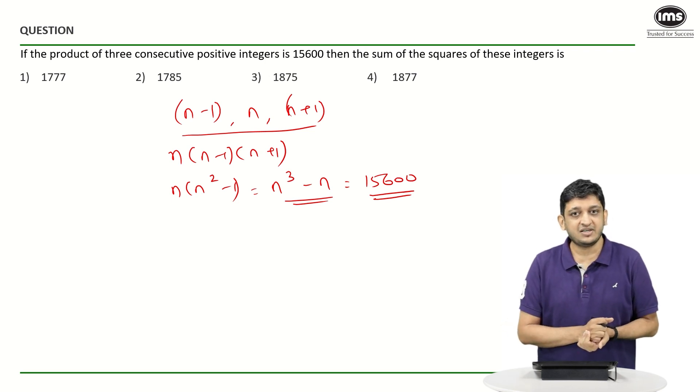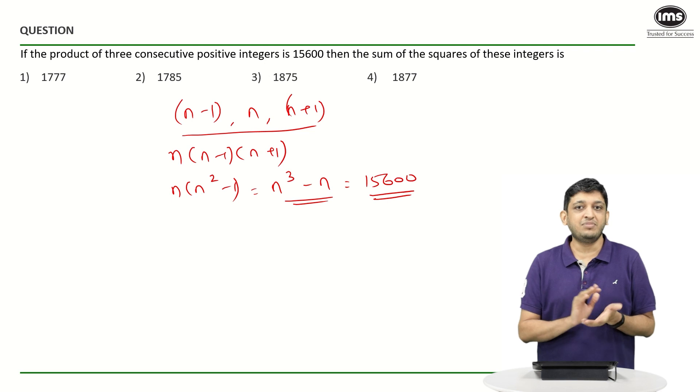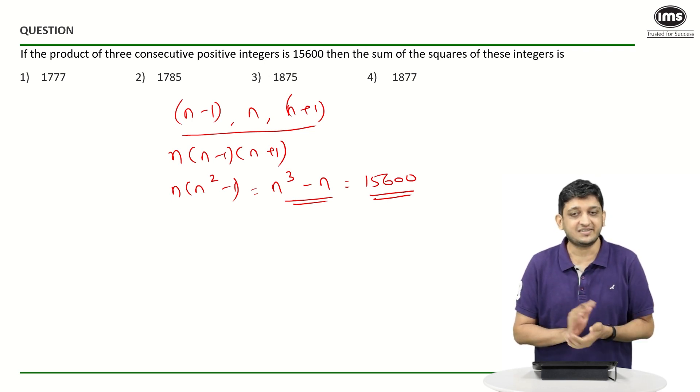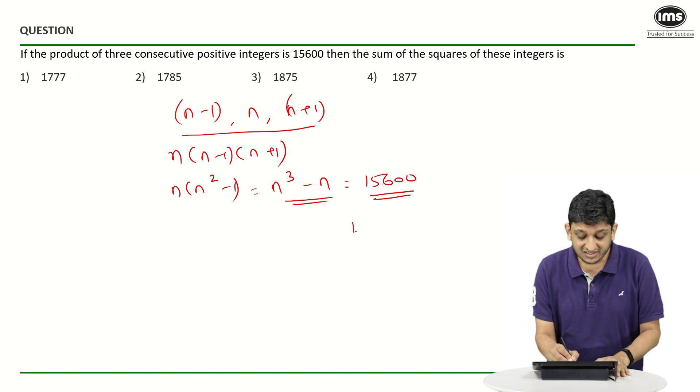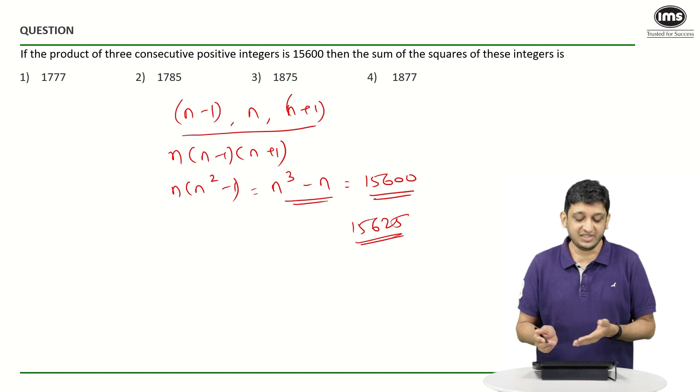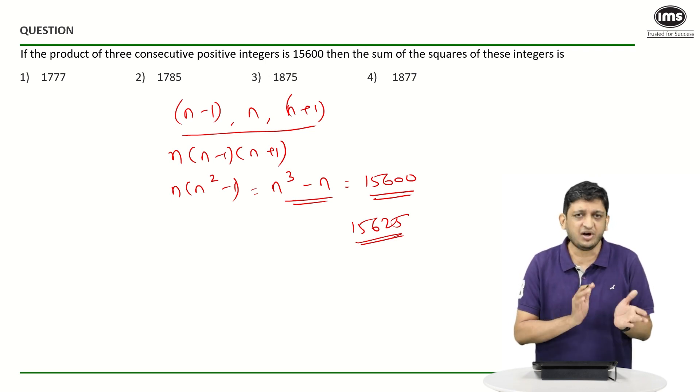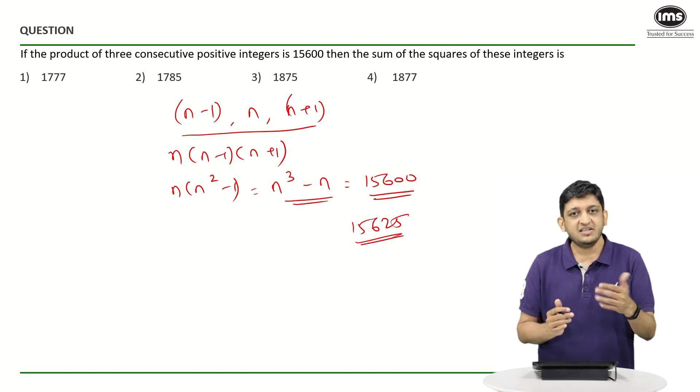Now what is a number whose cube is going to be very close to 15600? That is the question. And for those of you who know this nice number called 15625 will know that I am talking about n equals 25. If you are not able to figure that out, you can even start thinking about ranges that we have.